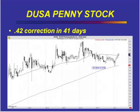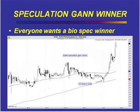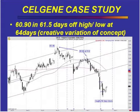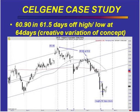Here's a biotech penny stock that had a $0.42 correction of 41 days. Look what happened — pretty amazing. And then another one was Celgene. It hit a price point of $60.90 in 61.5 days off the high. It hit the midline — perfect symmetry. And it really sold off. If I'm not mistaken, the high on that was close to 64, and it bottomed in 64 days. What I'm showing you is not an isolated incident — you can find these things on a regular basis.